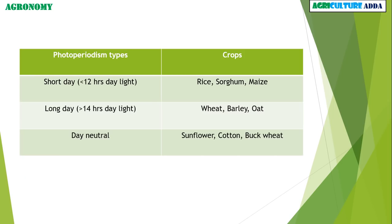The types of photoperiodism and their crops: Short day — Rice, Sorghum, Maize. Long day — Wheat, Barley, Oat. Day neutral — Sunflower, Cotton, Buckwheat.